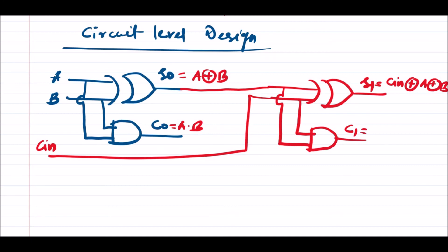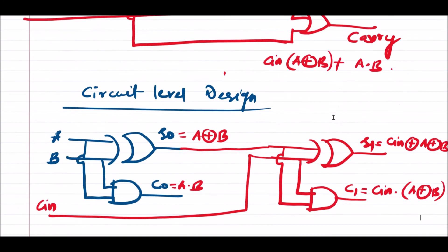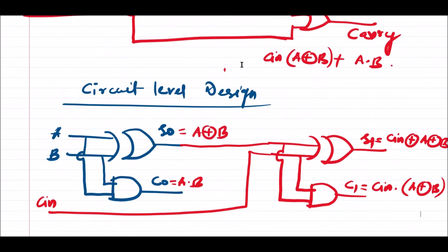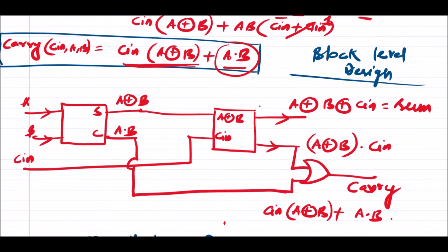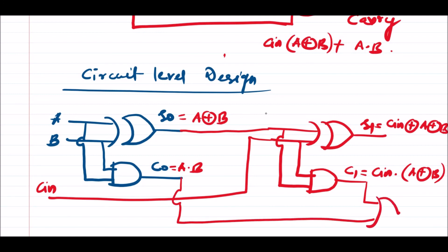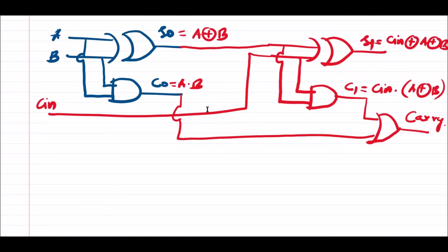The carry output C1 of the second half adder equals (A XOR B)·Cin. As per the carry equation we developed, the final carry output is the OR connection of Cin·(A XOR B) and A·B. The first term A·B is C0 from the first half adder, and the second term Cin·(A XOR B) is C1 from the second half adder. Connecting these two outputs through an OR gate gives the final carry output.